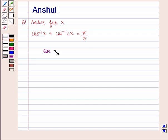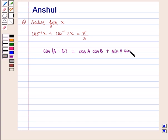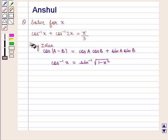The key ideas we will use are: cos of (a minus b) is given by cos a into cos b plus sin a into sin b, and cos inverse of x is equal to sin inverse of square root of 1 minus x square. With this key idea let us proceed with the solution.